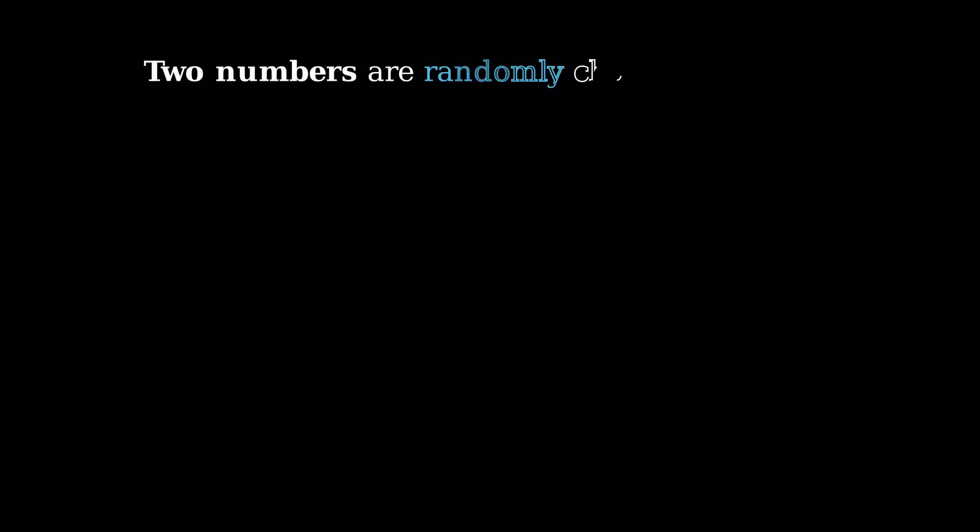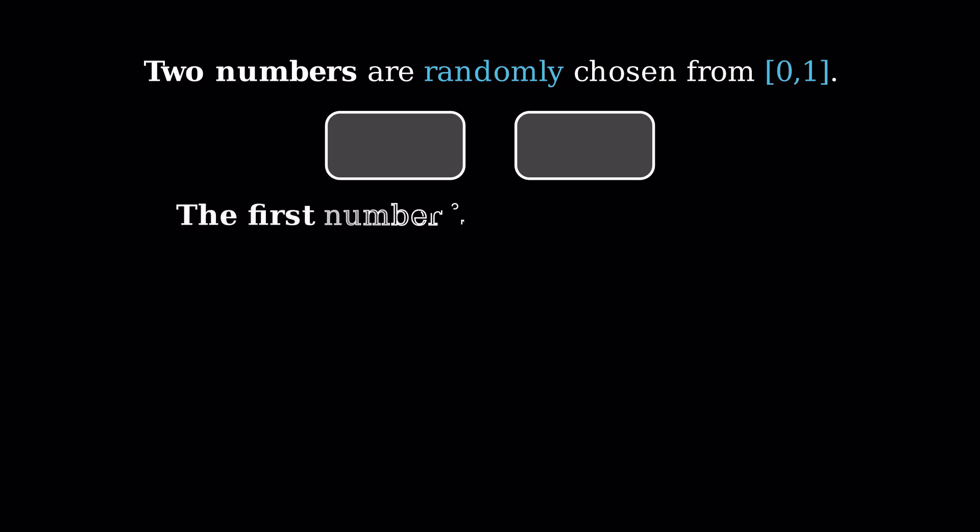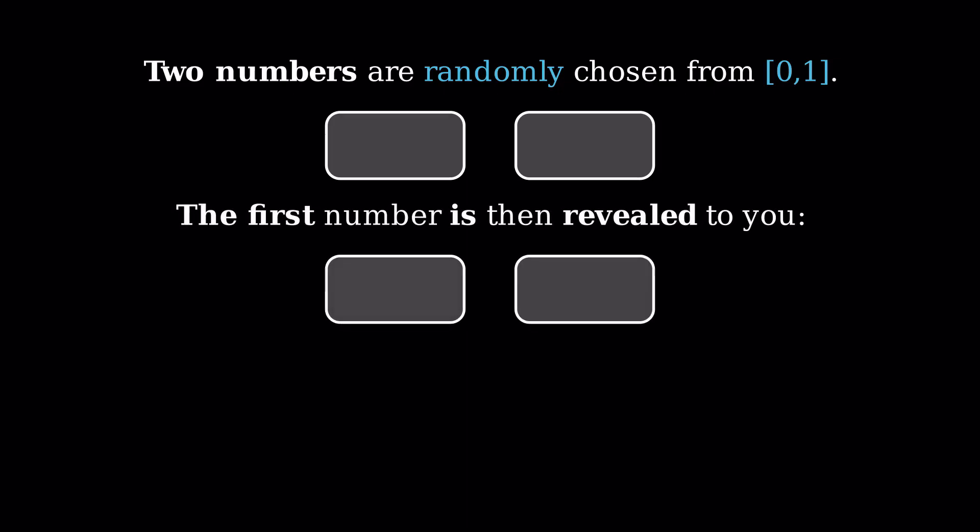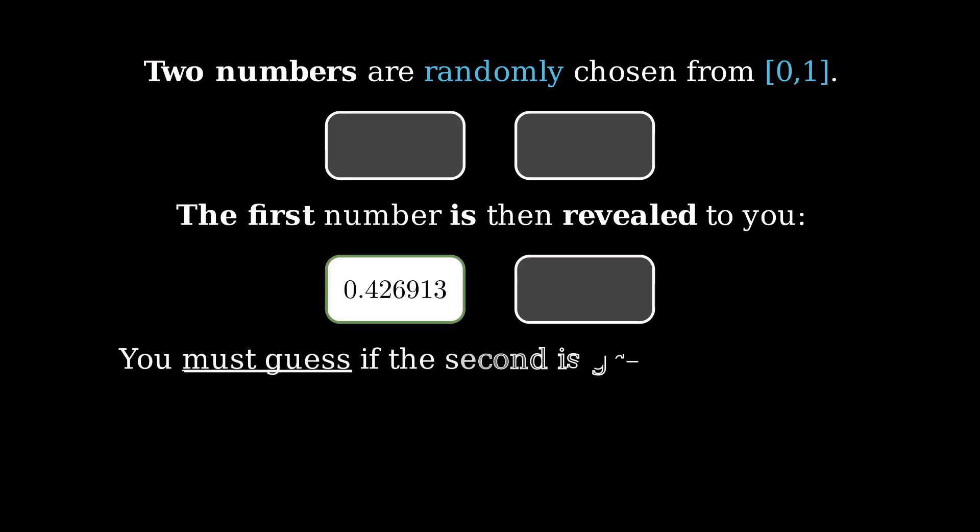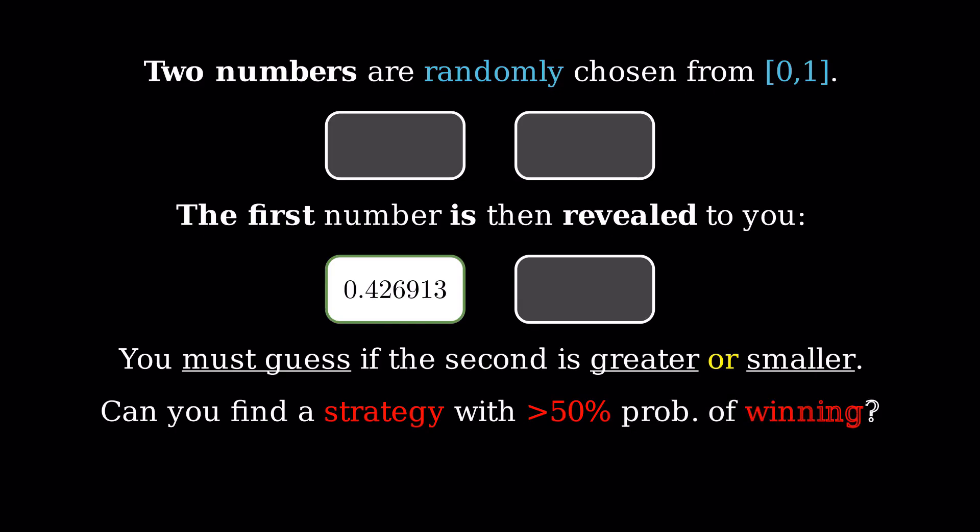Two numbers are randomly chosen from the closed interval 0-1. Afterwards, you see the first number. You now must guess if the second, unseen number is greater or smaller. Can you find a strategy with more than a 50% probability of winning?